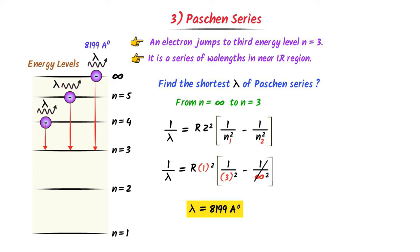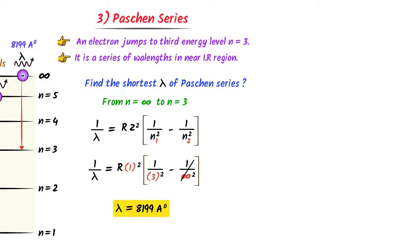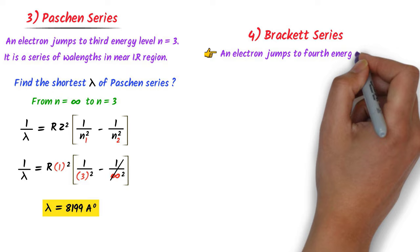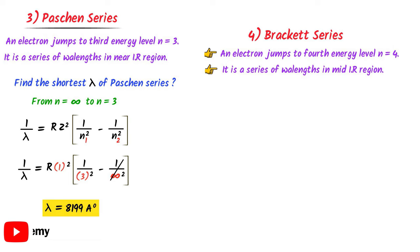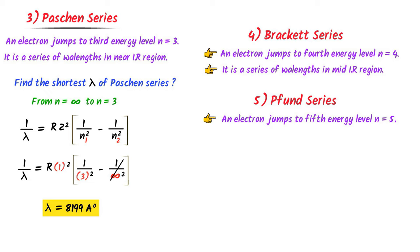The fourth series is the Brackett series, where an electron jumps to n = 4 — it is in the mid-infrared region. The fifth series is the Pfund series, where an electron jumps to n = 5 — it is in the far-infrared region. This covers all important series of the atomic spectrum of hydrogen.